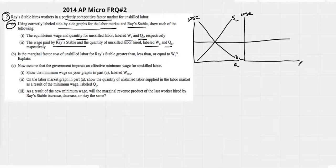Wage on the vertical. Quantity of labor. So this is the market and this is Ray's.